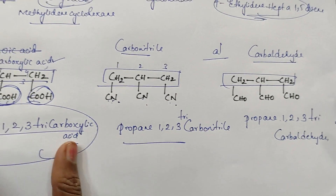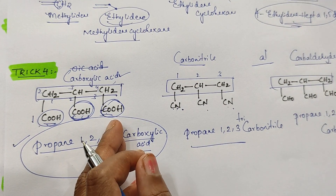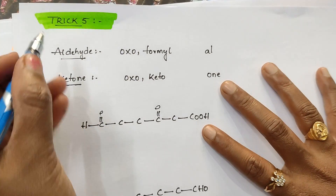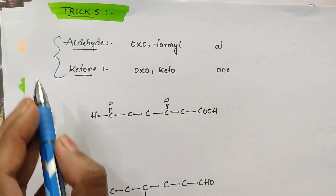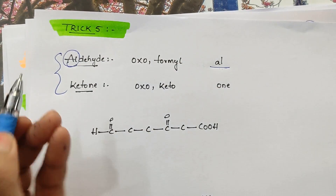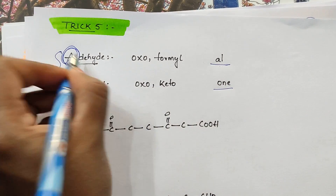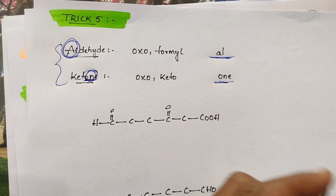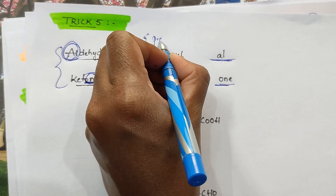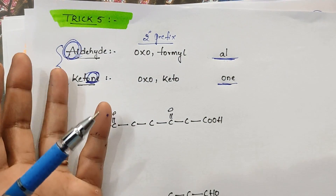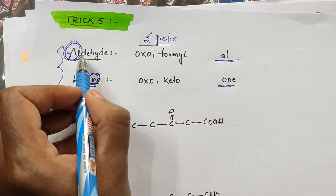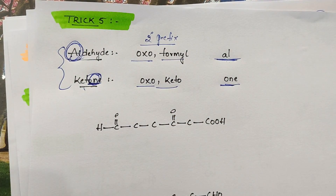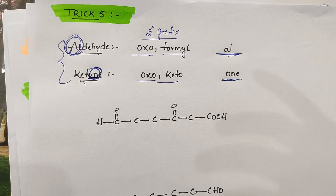In trick number 4, you got the clarity regarding when more than two same functional groups are there, how you have to give the naming. Now I am going to teach you trick number 5. In this trick, you are going to learn about aldehyde and ketone — how you can give the naming. For aldehyde, if it is a main functional group, we use al. For a ketone, we use one. But whenever it is a side chain — secondary prefix — for aldehyde we use oxo or formyl, for ketone we use oxo.